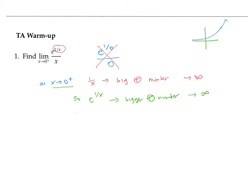So e to the one over x as x goes to zero plus is also going to infinity. So the numerator here is going to infinity, and the denominator is going to zero. All right, but let's keep reasoning some more. So on the numerator, we said we had, we're getting big positive numbers.